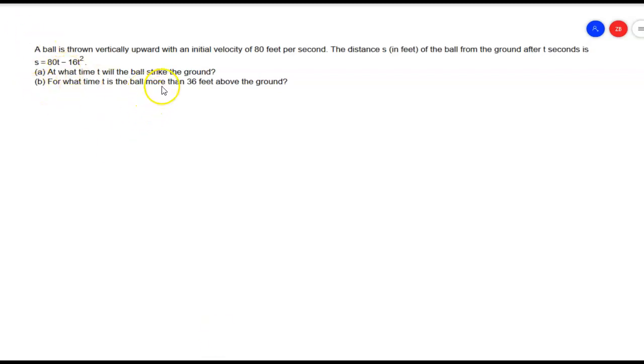It says a ball is thrown up vertically with an initial velocity of 80 feet per second. The distance s in feet of the ball from the ground after t seconds is given by this equation: s equals 80 times the number of seconds minus 16 times the number of seconds squared.